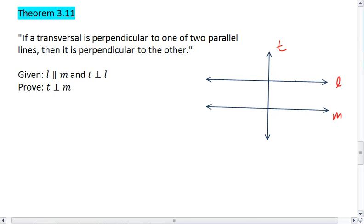So basically, if I have two parallel lines, and I know that the transversal t is perpendicular to one of them, I want to prove that t must also be perpendicular to the other.